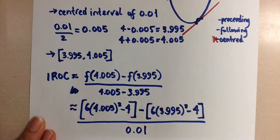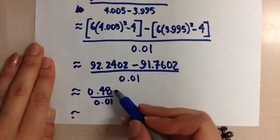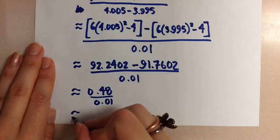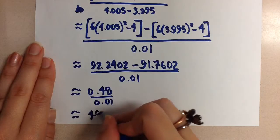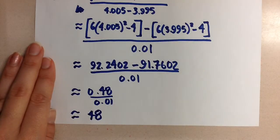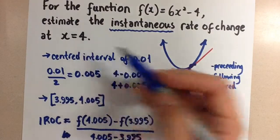And when you calculate this, we get 0.48 over 0.01. Oh, pardon me. We got 0.48 over 0.01. And then when we calculate this, we get 48 as our instantaneous rate of change at x equals 4 for this equation.